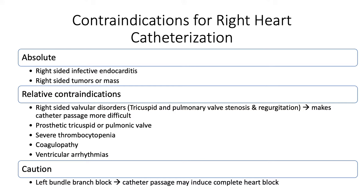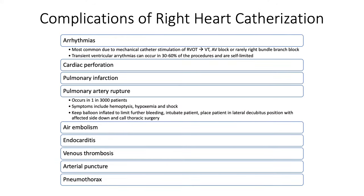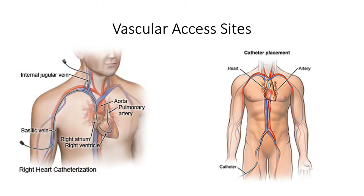If a patient already has a left bundle branch block, performing right heart catheterization may on occasion induce transient complete heart block. Complications of right heart catheterization are very rare. On occasion you may trigger an arrhythmia, and very rarely cardiac perforation may occur with overly zealous technique. Perforation and rupture of the pulmonary artery is rare but if it occurs it is a devastating complication.